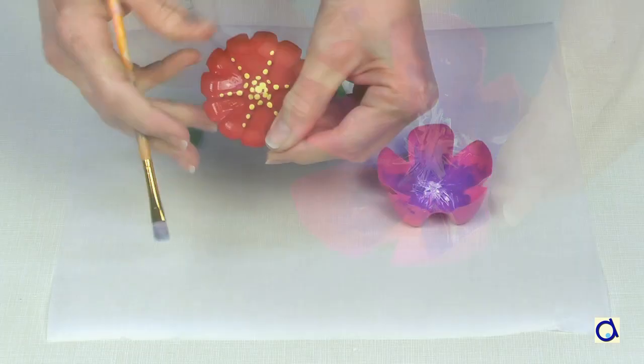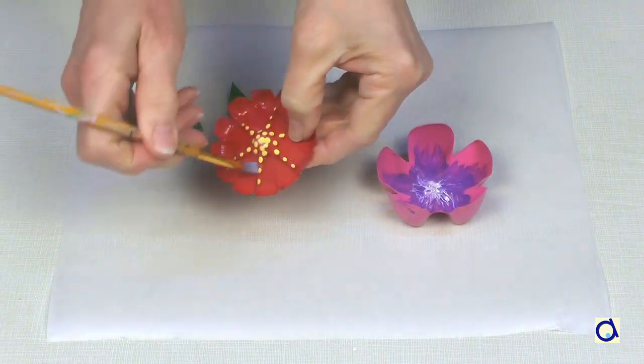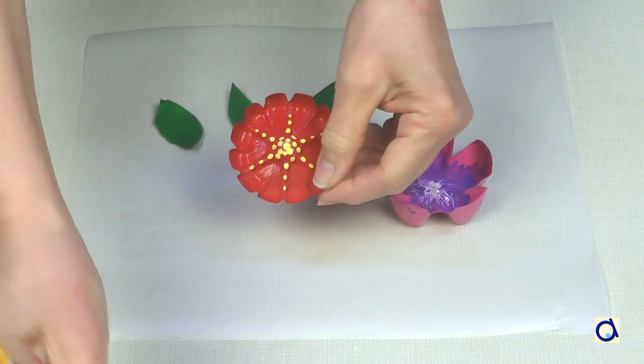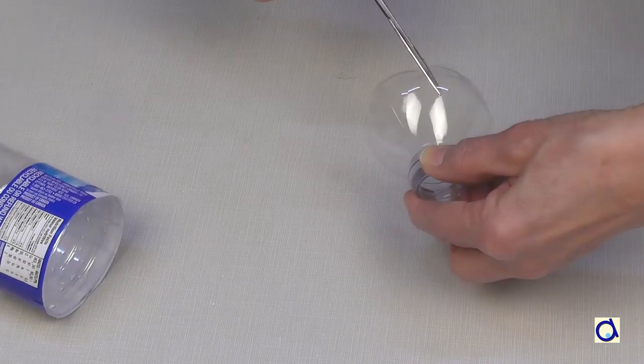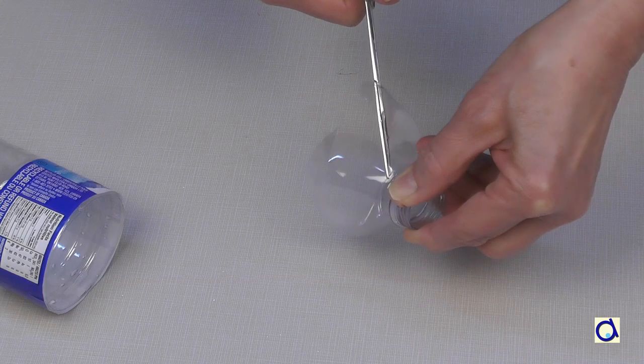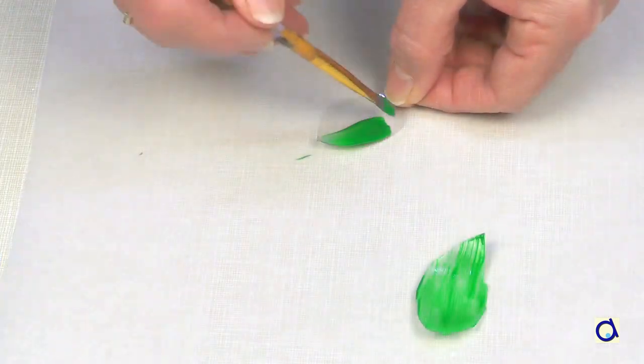When the paint is completely dry, add a coat of varnish. That helps bring out the colors even more. For the leaves, cut them out from the top of the bottle where the plastic is smoother. Apply two coats of green paint.